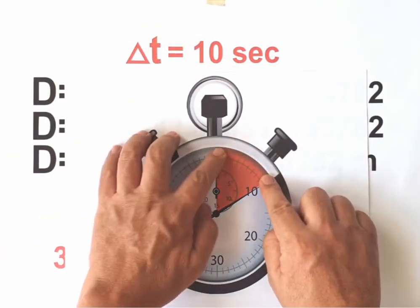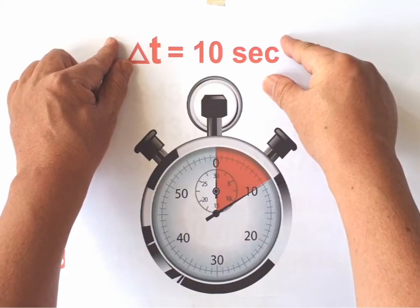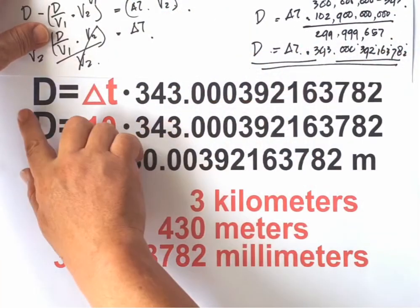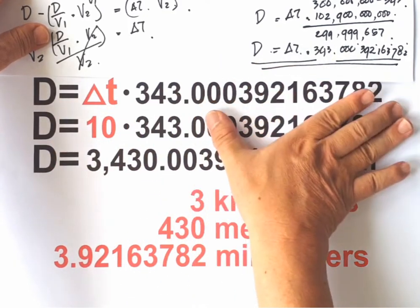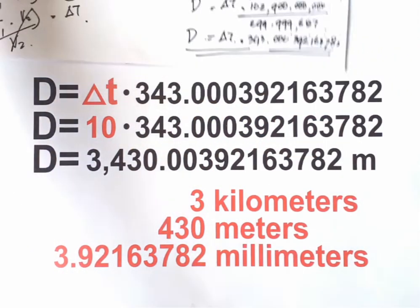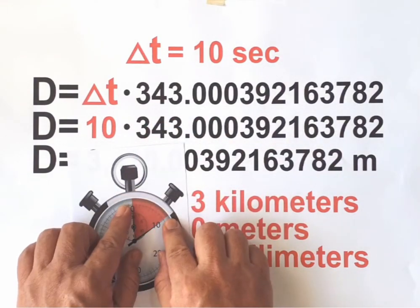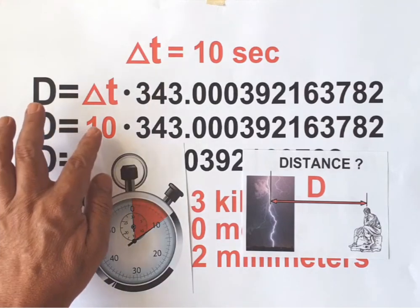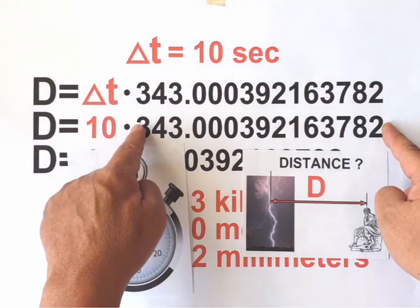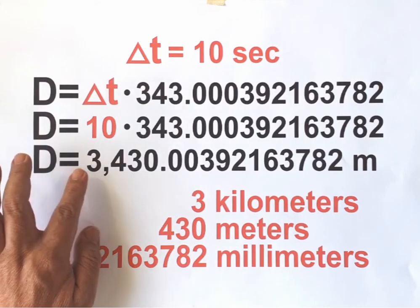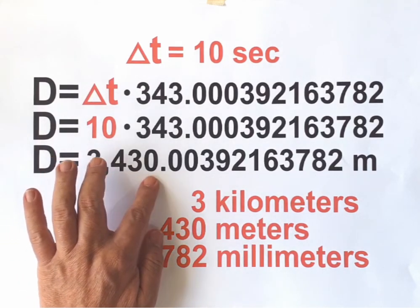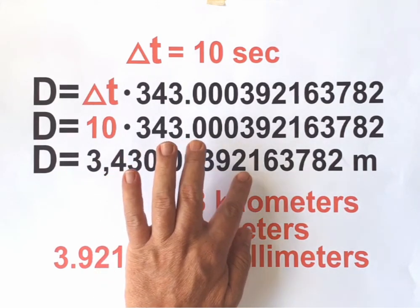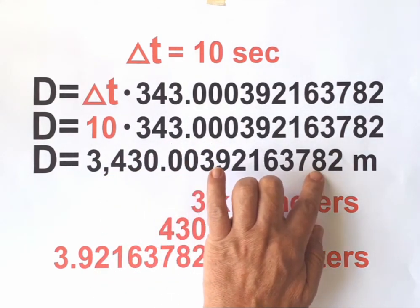If the measured interval was 10 seconds, then delta T will be 10 seconds. Looking back to the coefficient that we have produced, it will be D equal to delta T multiplied by this number. So if interval value was 10, then how far is the distance? It will be D equal to 10 multiplied by this number, so D will be equal to 3430.00392163782 meters.